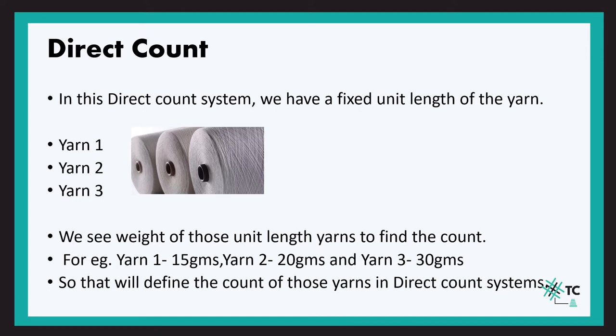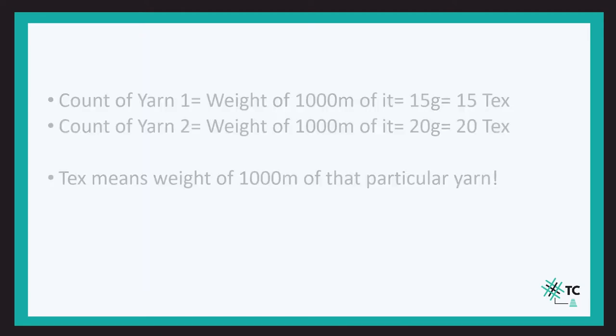The count of yarn 1 would be the weight of that 1000 meters, that is 15 grams, so the count for yarn 1 will be 15 tex. Similarly, for yarn 2 it will be 20 tex and for yarn 3 it will be 30 tex.